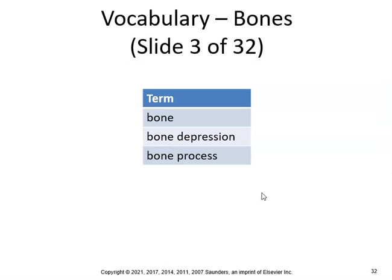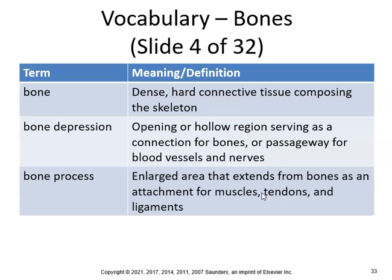A bone is dense, hard connective tissue composing the skeleton. A bone depression is an opening or hollow region serving as a connection for bones or passageway for blood vessels and nerves. A bone process is a large area extending from bones as an attachment point for muscles, tendons, and ligaments.